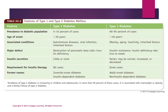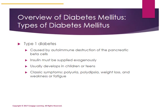Type 2 diabetes is said to be harder to treat and harder to detect in young children, making physical activity and lifestyle changes imperative. With type 1 diabetes, pancreatic beta cell destruction occurs and insulin must be supplied exogenously for life. It usually develops in children, teens, or early adulthood — most people are under the age of 30 when diagnosed. Classic symptoms of type 1 diabetes include polyuria, polydipsia, weight loss, and weakness or fatigue.